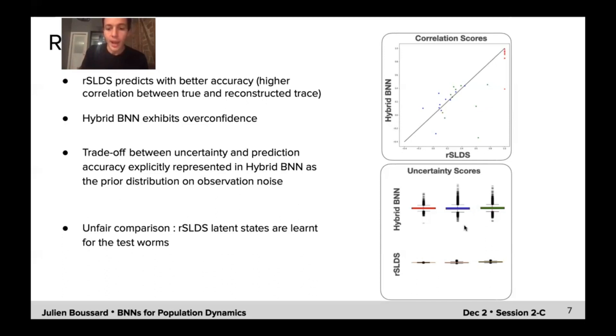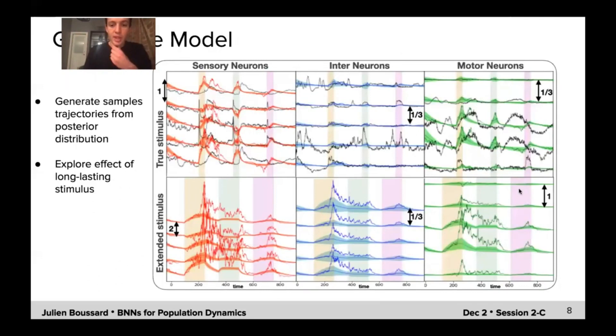So, however, our network, we've seen that first, the variance is input dependent, so the uncertainty is meaningful here. And then, our network allows to explicitly perform this trade-off between accuracy and uncertainty by looking at the posterior over weights and the posterior over observation noise. And finally, it's important to note that when doing OSRDS here, we actually trained on the test worms to get the latent states before generating the sample. So, it's not fully test data for OSRDS.